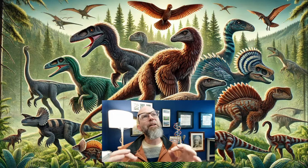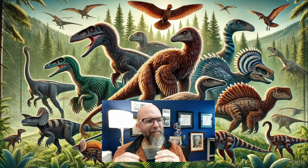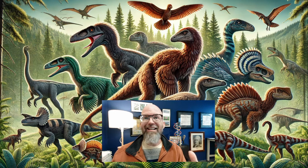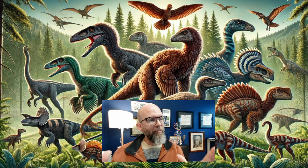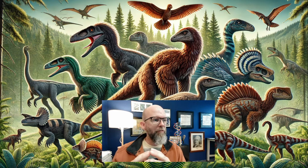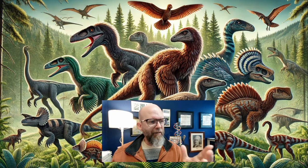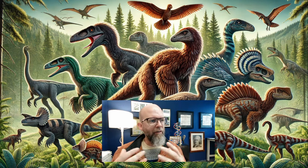Hey everybody, Joel Duff here. Today we're taking a little foray into the heart of young earth creationist thinking about the concept of organisms being created according to their own kinds. What is a kind? You've probably heard this phrase before, especially if you've been engaged with creationist literature or debates about origins, but what does that word really mean — created according to their kinds? Where does the idea come from and how does it shape young earth creationist understanding of life's diversity?